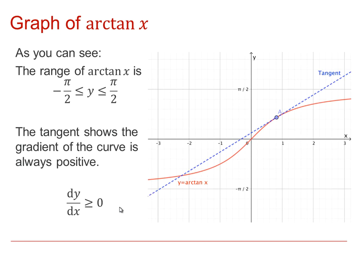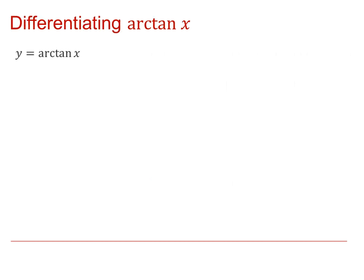So now what we're going to do is to consider how we find a function in terms of x for the derivative dy by dx, if y is equal to Arctanx. Well, if y equals Arctanx, then we can say that the tangent of y must be equal to x, and we can then differentiate both sides of this equation with respect to x.